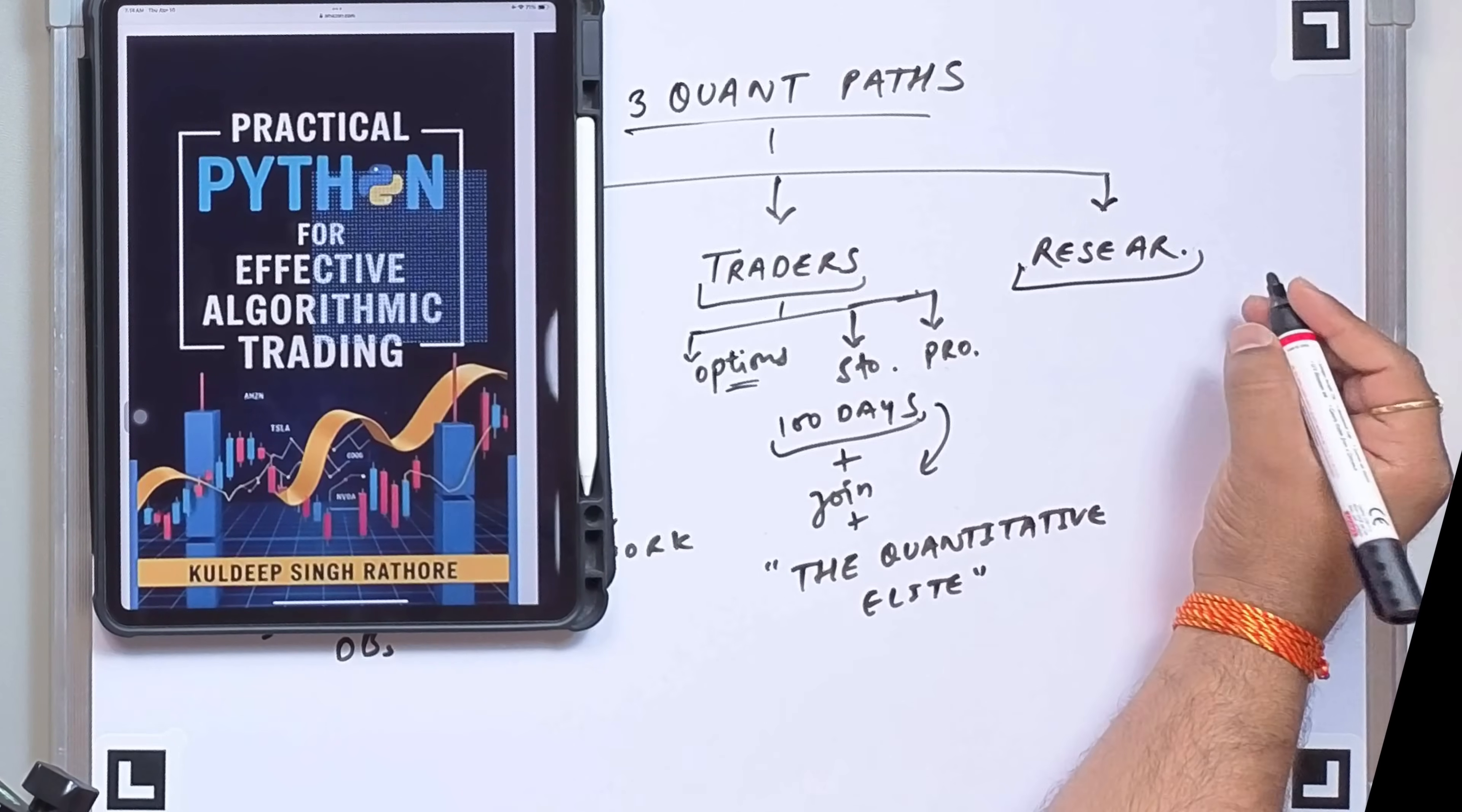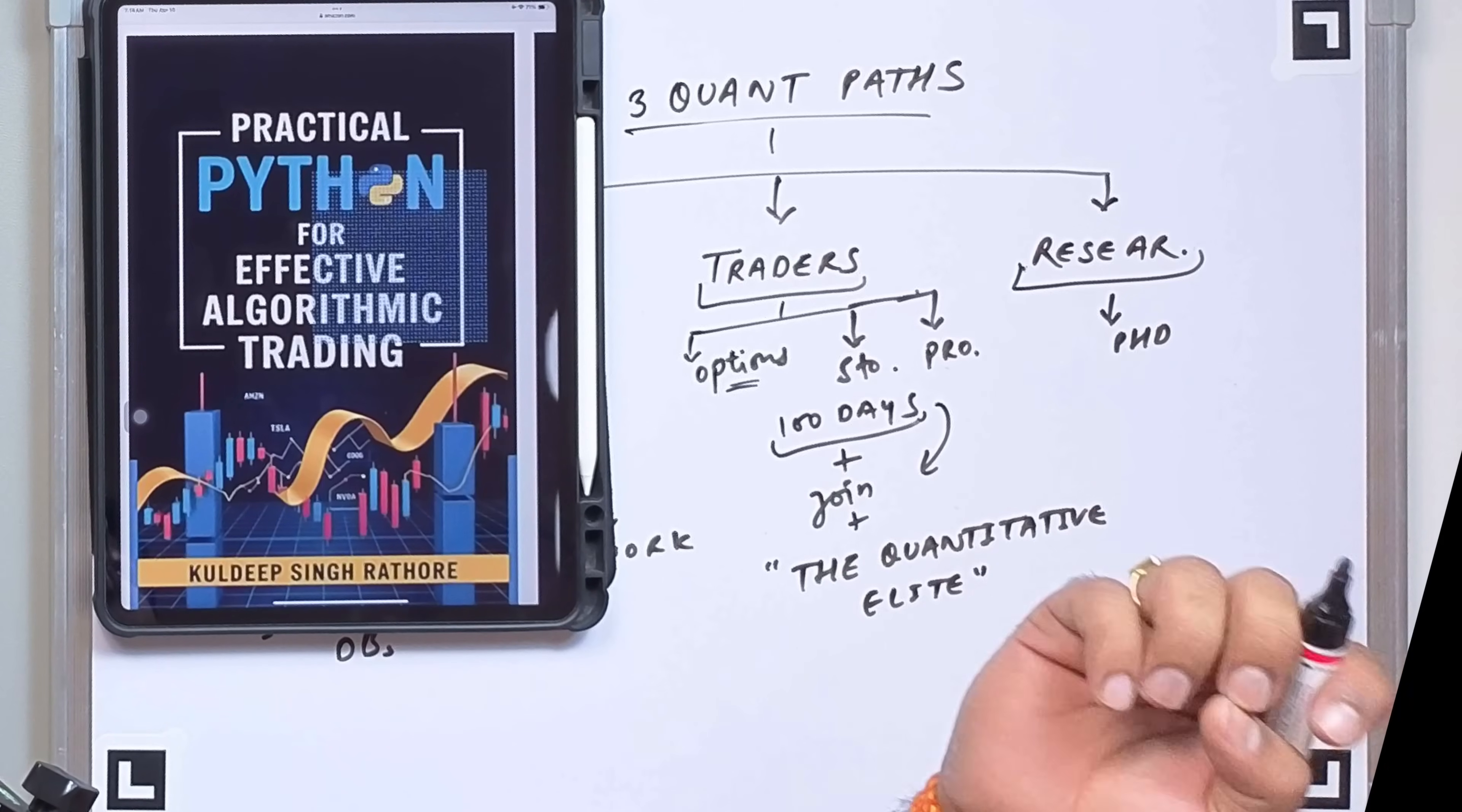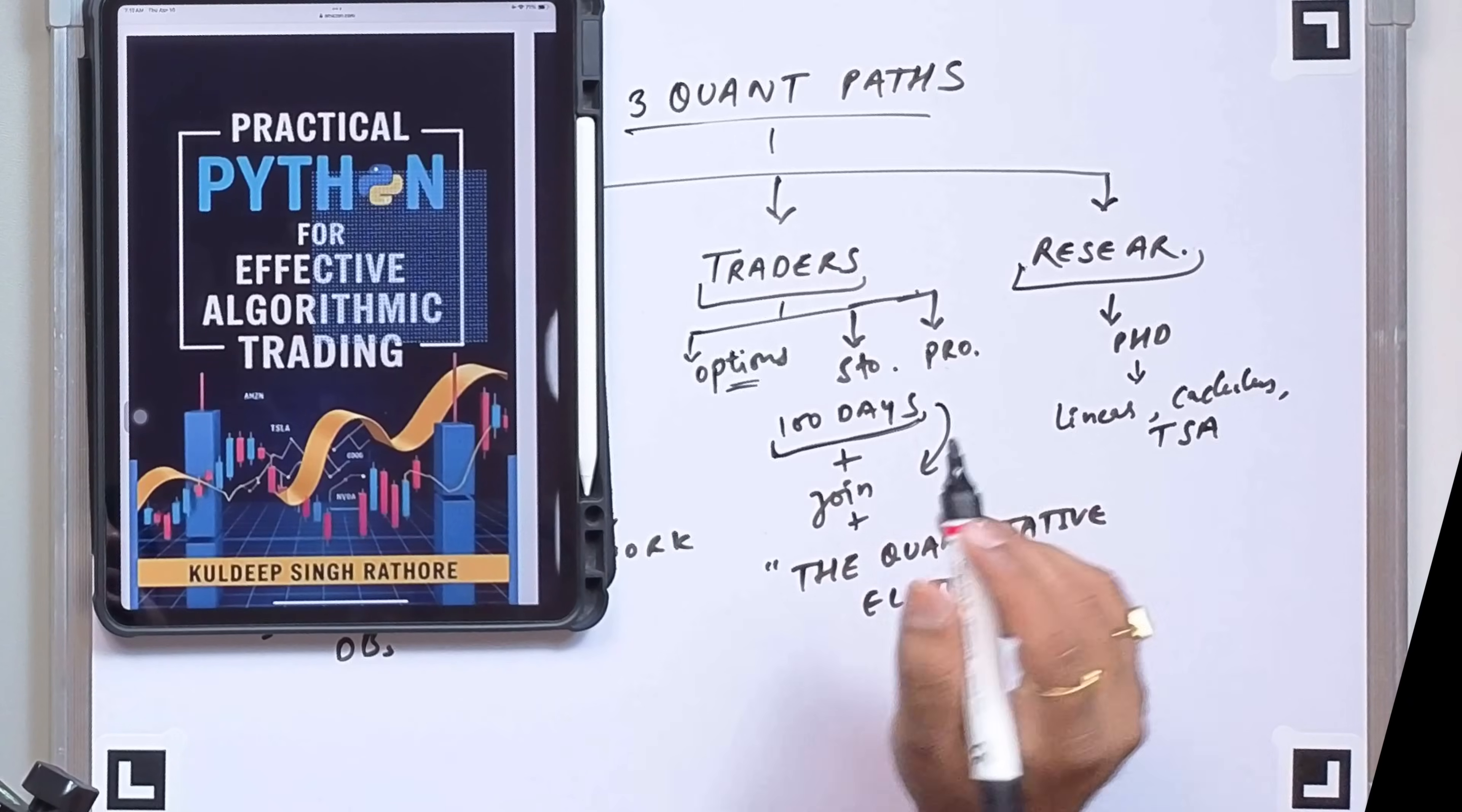Finally, we have quant researchers, the scientific pioneers who develop the mathematical models that drive everything else. These are often PhDs with deep mathematical knowledge who can spot inefficiencies others miss. Linear algebra, multivariable calculus, time series analysis - these are just the entry tickets. And for your kind information, I have explained linear algebra very well, very beginner friendly. This multivariable calculus I explained, and also the time series analysis you can find in this 100 days series, and it will be definitely a very good start point for anyone, even if you are a beginner, it will really help you.